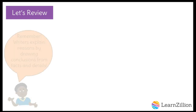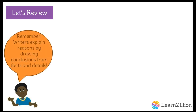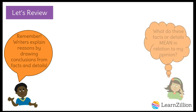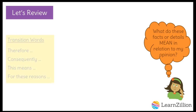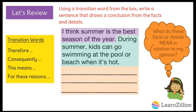Now that you know that writers draw conclusions from facts and details by asking themselves, "What do these facts or details mean in relation to my opinion?" use a transition word from the box to write a sentence that draws the conclusion from the facts and details. Pause the video while you do this, then press play when you are ready to continue.